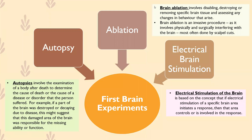Today we're covering the first brain experiments and a little bit about hemispheric specialization, which you might remember from Year 10 psychology. We're looking at the three types of first brain experiments — basically from the beginning, when people were first trying to understand the structure and function of the brain. Last class we talked about different theories that Greek philosophers suggested, and today we're looking a little bit later into history.